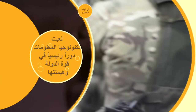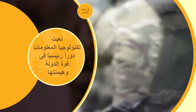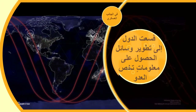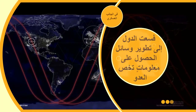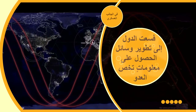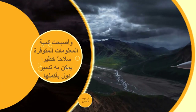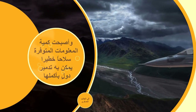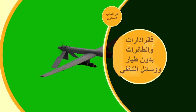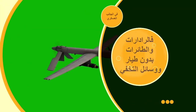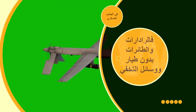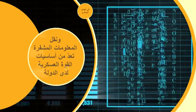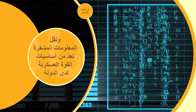في الجانب السياسي والعسكري: لعبت تكنولوجيا المعلومات والاتصالات دوراً رئيسياً في قوة الدولة وهيمنتها، فسعت الدول الكبرى إلى تطوير وسائل التواصل ووسائل الحصول على معلومات تخص العدو. وأصبحت كمية المعلومات المتوفرة سلاحاً خطيراً يمكن به تدمير دول بأكملها، فالرادارات والطائرات بدون طيار ووسائل التخفي ونقل المعلومات المشفرة تعد من أساسيات القوة العسكرية لدى الدولة.